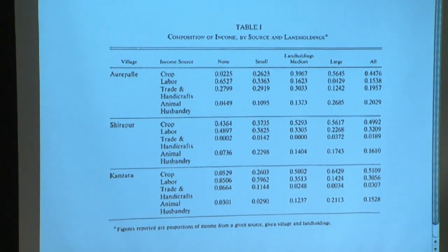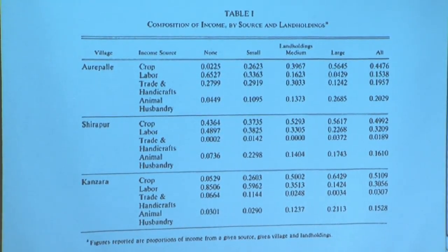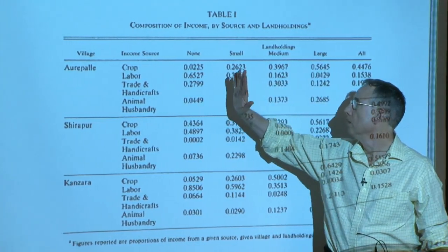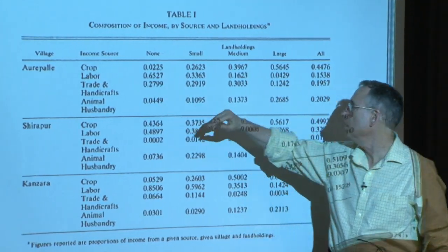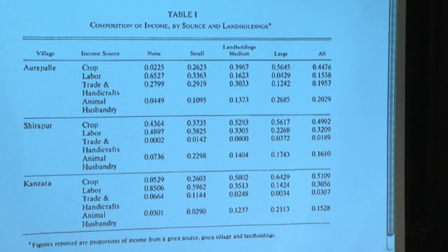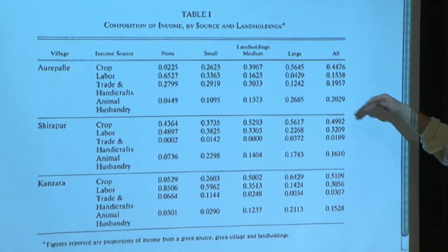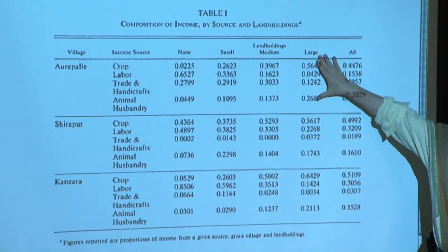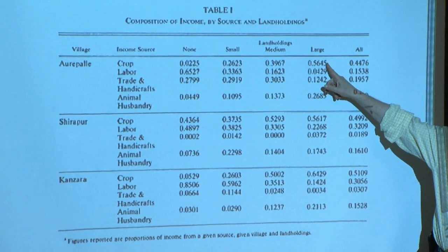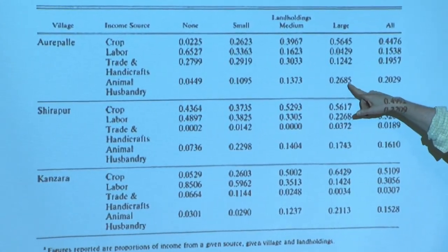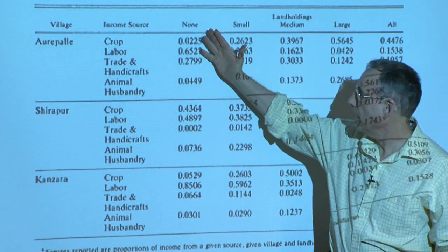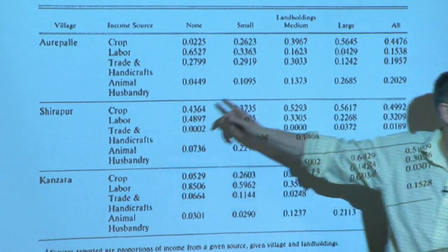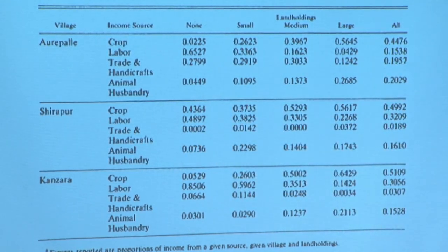By cruder categories like labor income, income from trade and handicrafts, animal husbandry — stratified by the amount of land they hold: none, small, medium, and large landholders. Large landholders have the bulk of their income from crops and a substantial amount from animal husbandry. People without land virtually have no crop income; the dominant source is from labor.